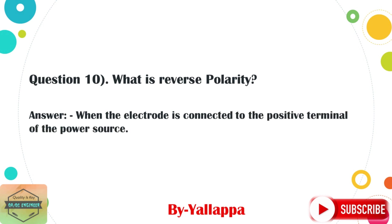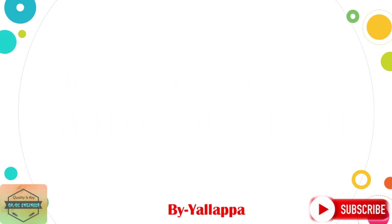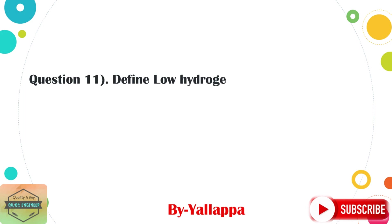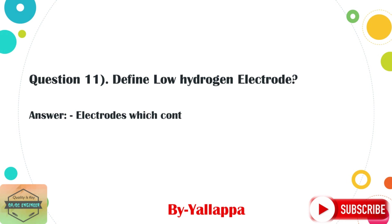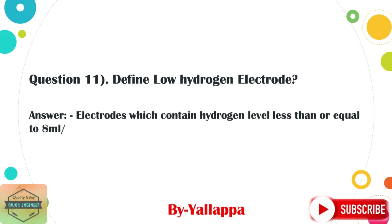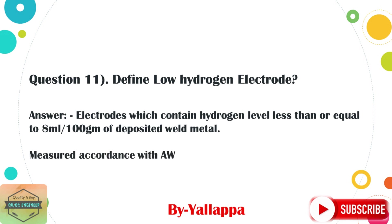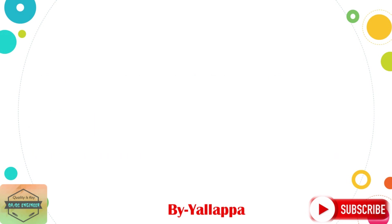Question 11: Define low hydrogen electrode. Answer: Electrodes which contain a hydrogen level less than or equal to 8 milliliters per 100 grams of deposited weld metal, measured in accordance with AWS A4.3.